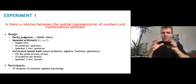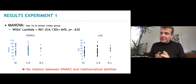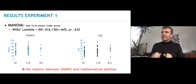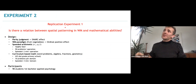Using parity judgment, speeded mental arithmetic, and a curriculum-based math task, we divided participants into three groups. We observed the SNARK effect at the group level, then performed a multivariate ANOVA with the two math tasks as dependent variables and group as independent variable. This ANOVA did not show a relation between SNARK and math abilities.